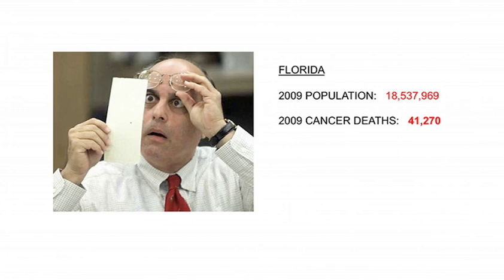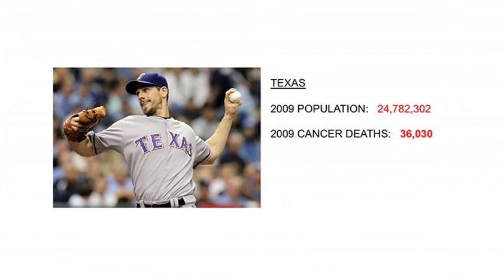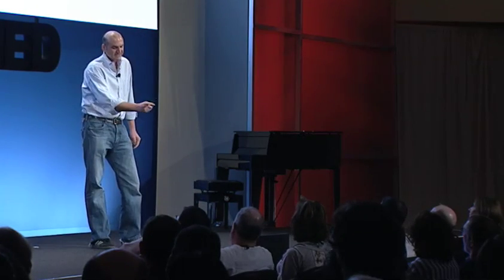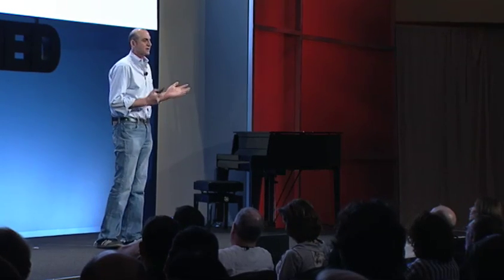It helps to think about Florida when you're trying to explain this — and this may be the only time you can say it helps to think about Florida. You have a population of 18 and a half million with 40-something thousand cancer deaths. That's a huge number, and as a crude rate it's actually much higher than the national average. If we compare it to Texas, you can see Texas has 6 million more people and 5,000 fewer cancer deaths a year. What's going on?